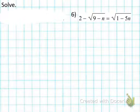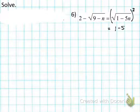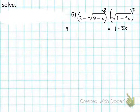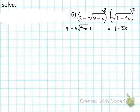Do we have a radical that's already isolated? Yes — sometimes you have to move a term, but here we already do. So we're going to square both sides. The right side: squaring √(1 − 5n) gives just (1 − 5n). The left side is a binomial, so we square it out. Squaring (2 − √(9−n)): first term is 4; middle term is −4√(9−n); last term is (9 − n). I put parentheses around that last term because it's a binomial.